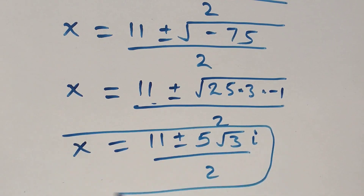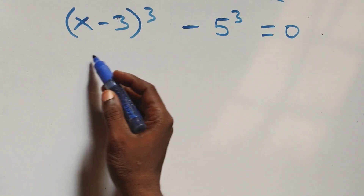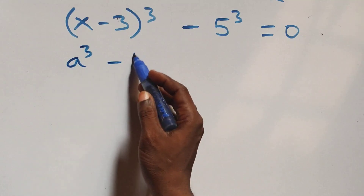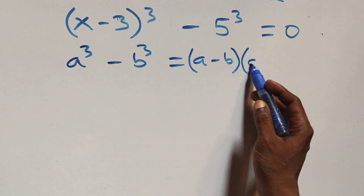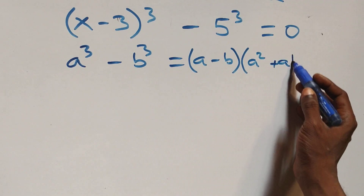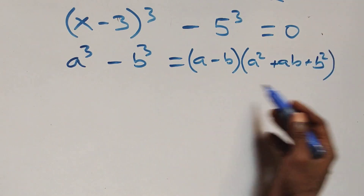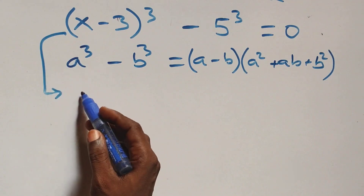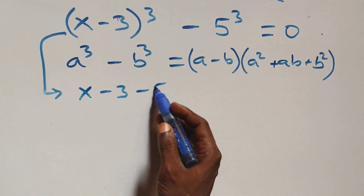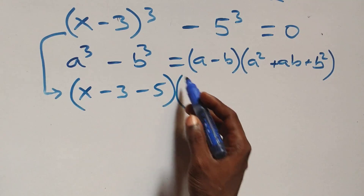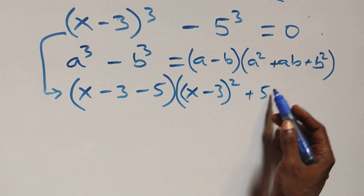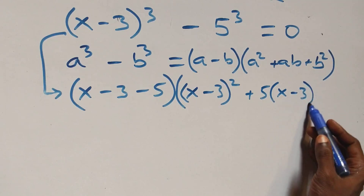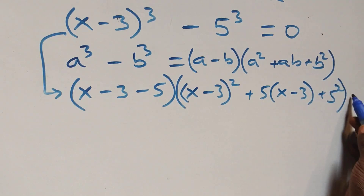Solving from the second case, this follows when we have a raised to power 3 minus b raised to power 3, which is the same thing as a minus b, into bracket, then open bracket, a squared plus ab plus b squared. That is, follow this and it becomes: x minus 3 minus 5, into bracket, then open bracket, x minus 3 squared, plus 5 times x minus 3, plus 5 squared, close brackets, and equals to 0 here.